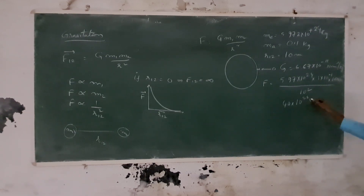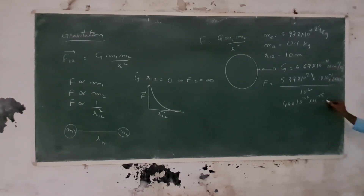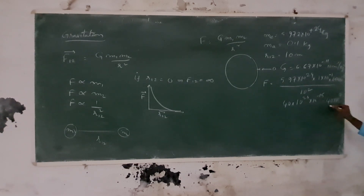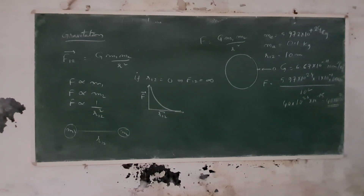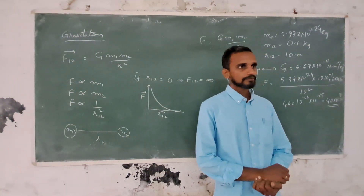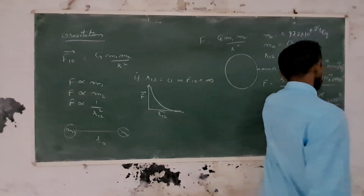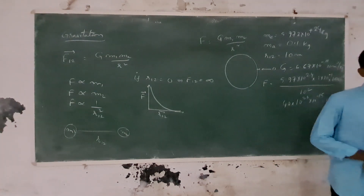So the exponent calculation gives 6.67 into 10 to the power 24 minus 1 minus 11, which is 10 to the power minus 15 combined. The result is 40 times 10 to the power 9 — that is the gravitational force between the apple and the earth.